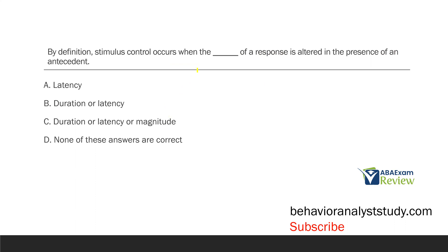By definition, stimulus control occurs when the blank of a response is altered in the presence of an antecedent. This is a straightforward definition question, but an important one. When we talk about stimulus control in practice, we typically mean a therapist, teacher, or parent has control over the behavior. But stimulus control is extended to all stimuli in the environment — if behavior changes more frequently in the presence of a stimulus, that stimulus is said to have stimulus control. More specifically, stimulus control occurs when the duration or magnitude of a response is altered in the presence of an antecedent.